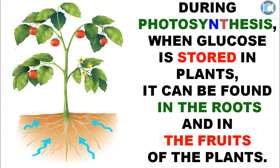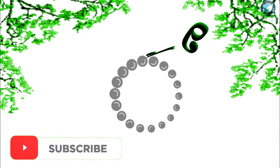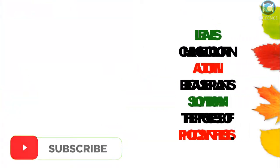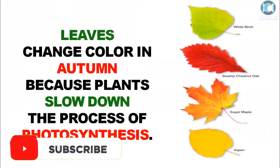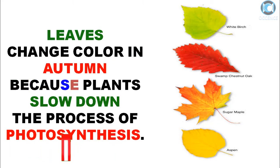During photosynthesis, when glucose is stored in plants, it can be found in the roots and in the fruits of the plants. Leaves change color in autumn because plants slow down the process of photosynthesis.